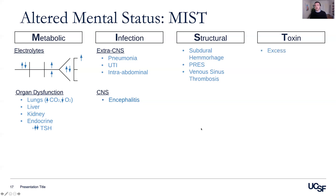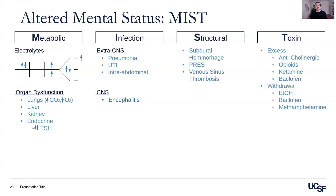Moving on to toxins, we can think about toxins that are in excess, such as anticholinergic toxicity, opioid overdose, ketamine use, or baclofen toxicity, as well as withdrawal states, including alcohol withdrawal, baclofen withdrawal, or when a patient is washing out from using methamphetamine.